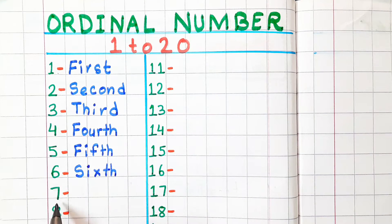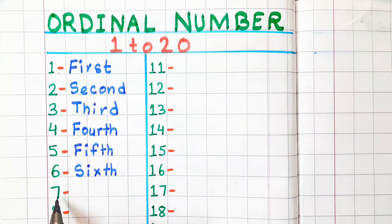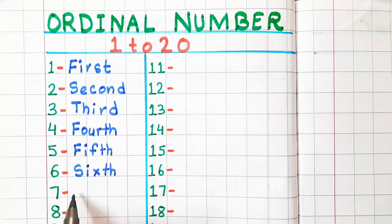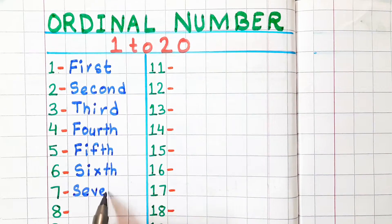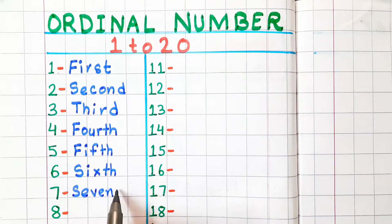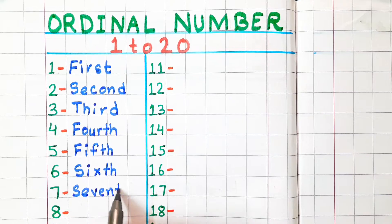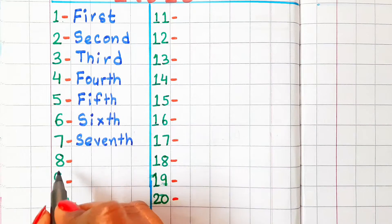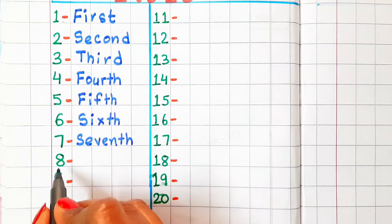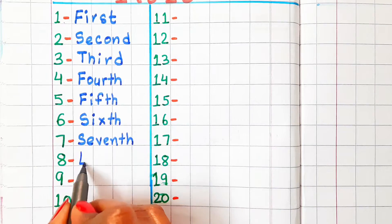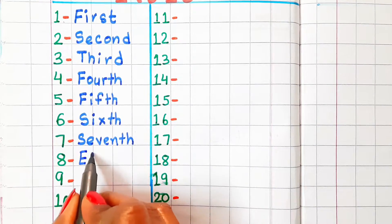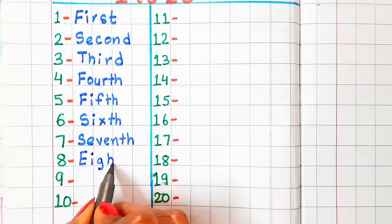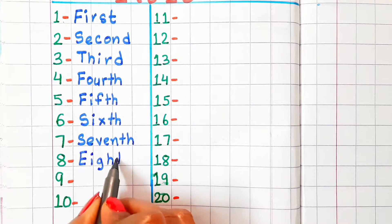7 — in ordinal number, it is called seventh. Spelling is S-E-V-E-N-T-H. 8 — in ordinal number, it is called eighth. Spelling is E-I-G-H-T-H.